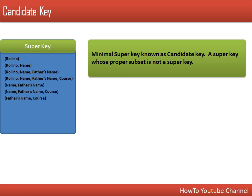What is the definition of candidate key? Candidate key is also known as minimal super key — the smallest super key. It cannot be decomposed or divided further. Another definition we will use to find candidate keys: a candidate key is a super key whose proper subset is not a super key. This means if we have a super key with some attributes, say three attributes, when we divide those three attributes into all possible combinations, those combinations should not be a super key.